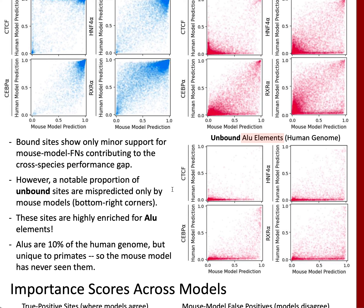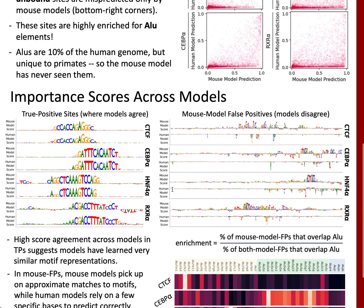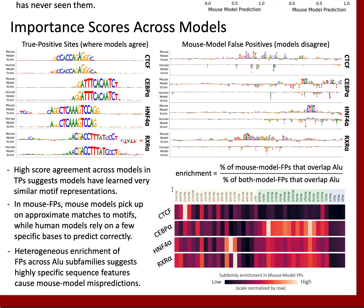To look deeper into why ALU elements in particular are mispredicted, we interpreted our models, scoring individual bases in example sequences based on how important each base is to the model's prediction. Comparing these importance scores across models, we saw that although the models seem to generally agree on the motif representation for each TF — shown best by the plots on the left — they do pick up on very different sequence features within false positive ALUs, shown here on the right. This, along with an analysis showing how heterogeneous the enrichment is across ALU subfamilies within our interesting false positives, suggests that highly specific sequence features are what's driving the differential ALU prediction between mouse and human models.